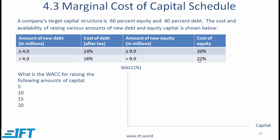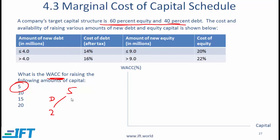Calculate the weighted average cost of capital for raising $5 million, $10 million, $15 million, and $20 million. Assume this capital structure. When a company raises $5 million, it is going to raise 60% from the equity market and 40% from the debt market. So the debt component is 40% of 5, which is $2 million. Equity is going to be $3 million, which is 60% of 5.